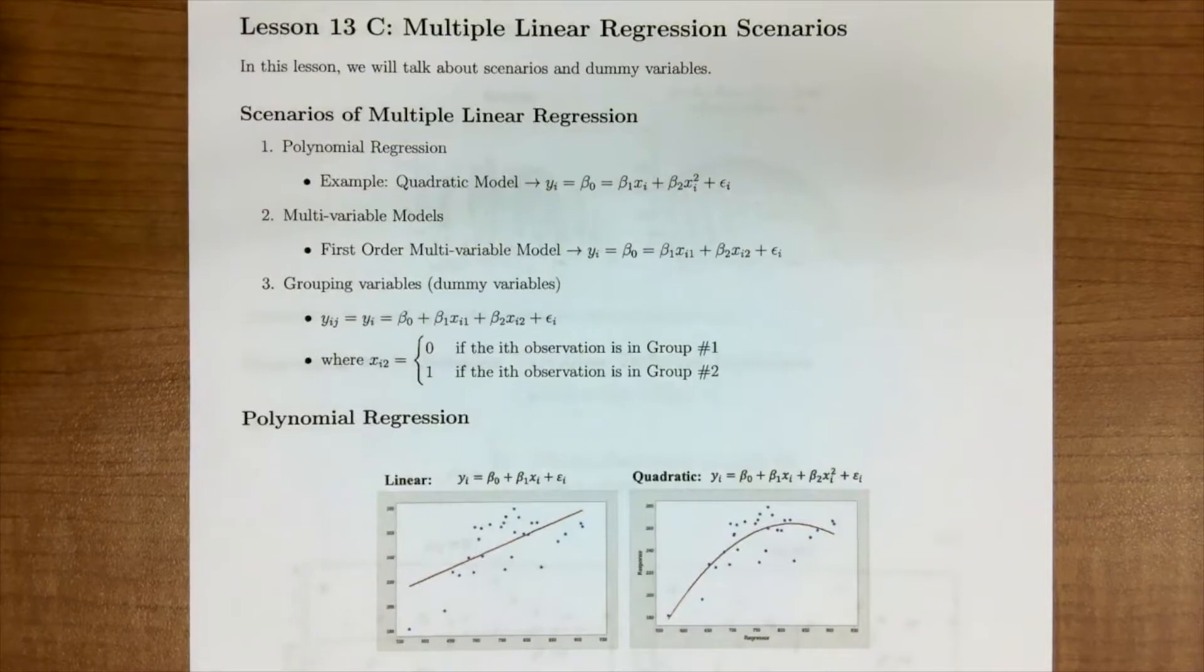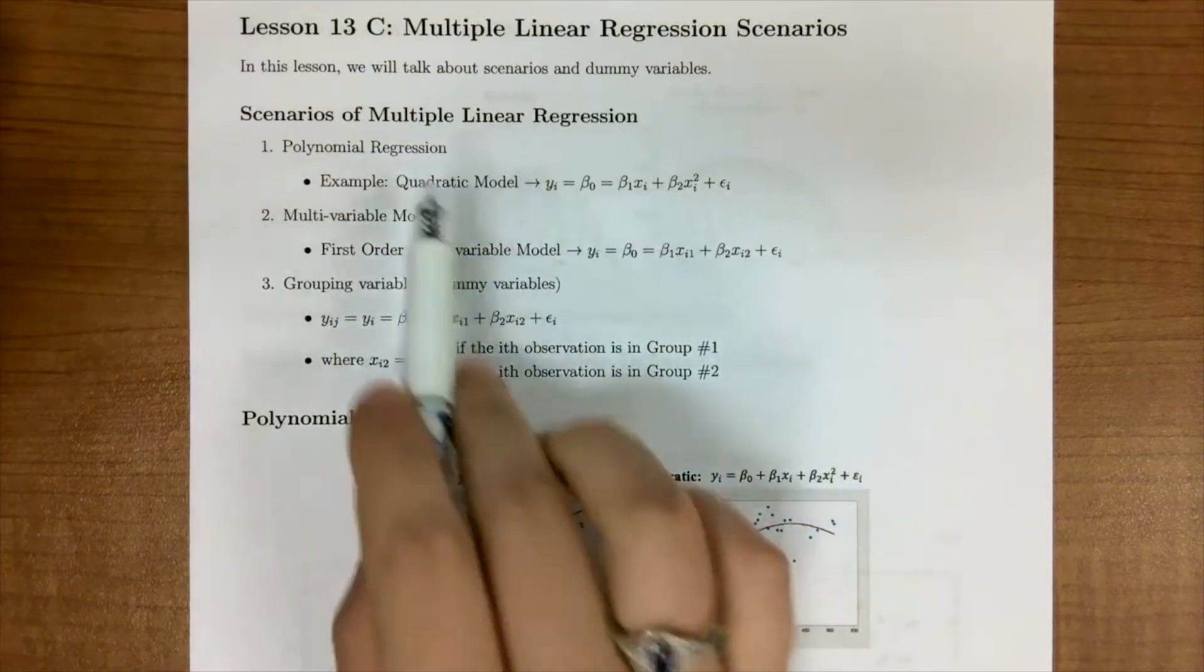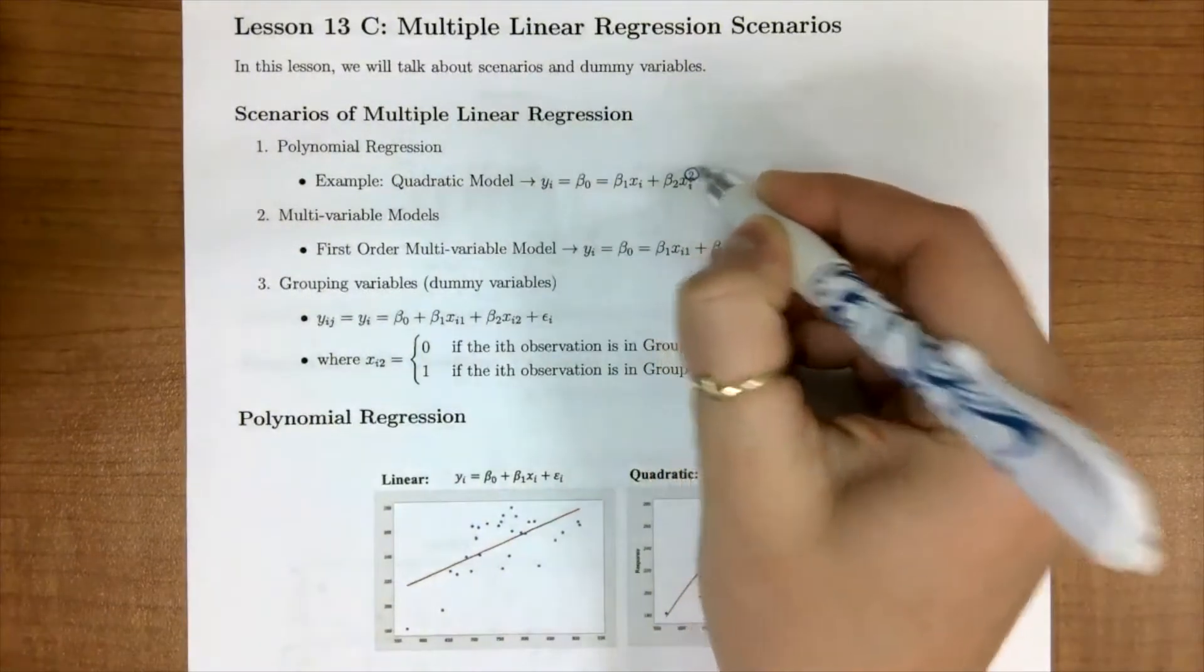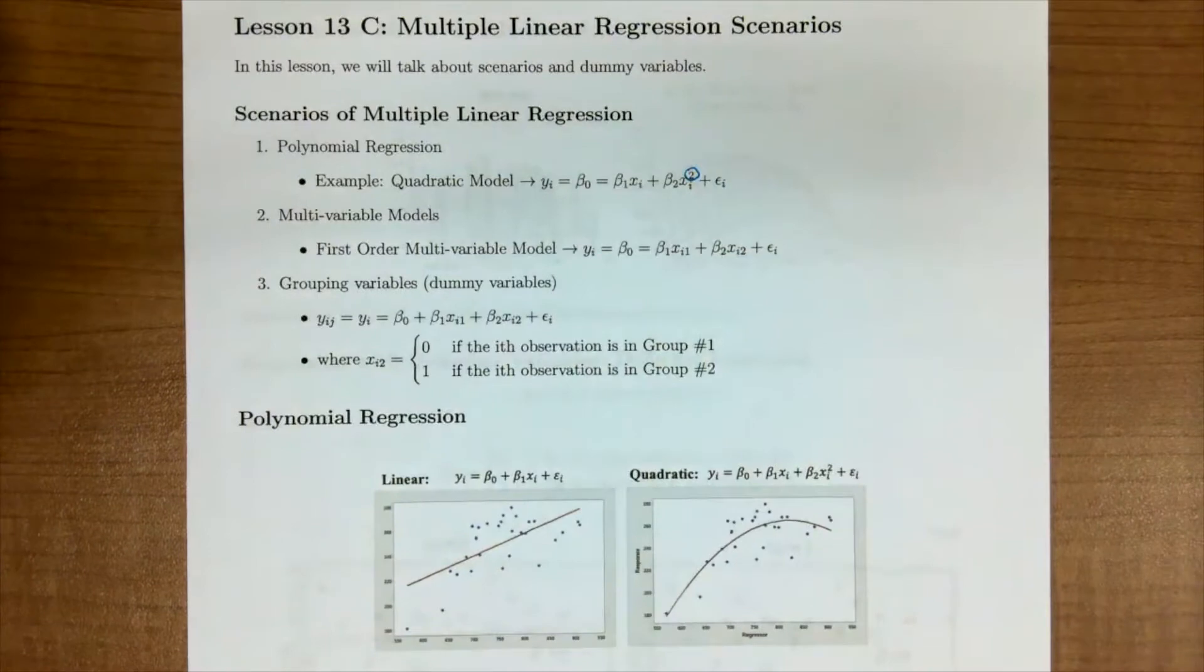So for scenarios in multiple linear regression, we can have polynomial regression, which is something like this quadratic model. Sometimes people don't think this is a linear model because they see this square right here, but remember when we say linear model, linear is in terms of the beta, where this square is on the x.